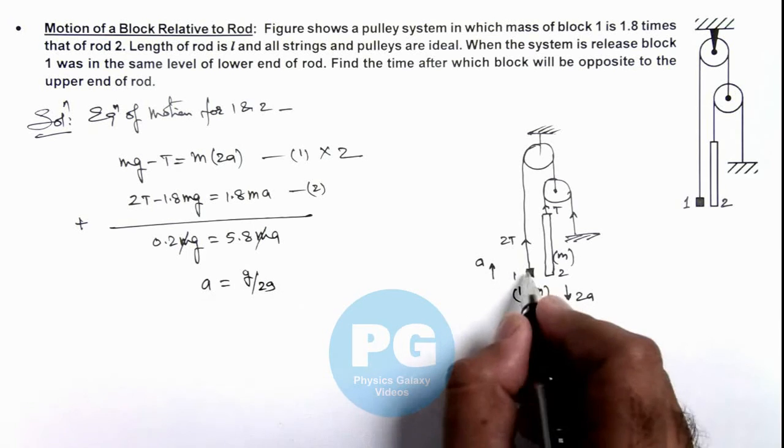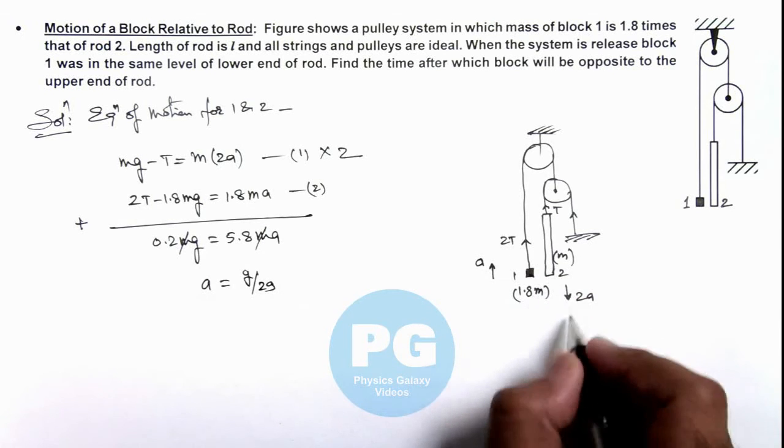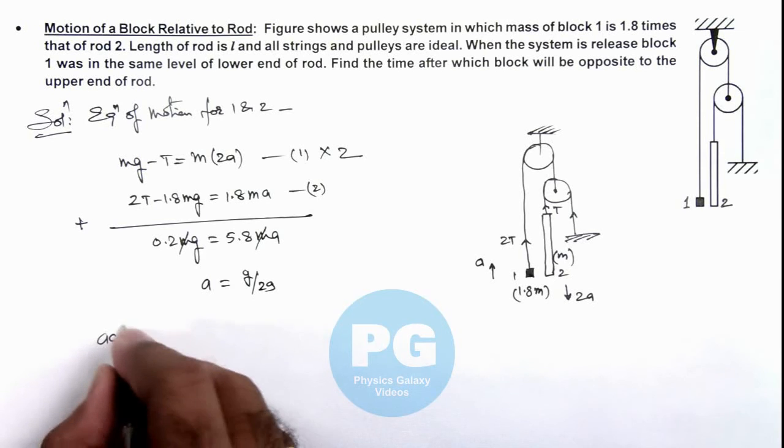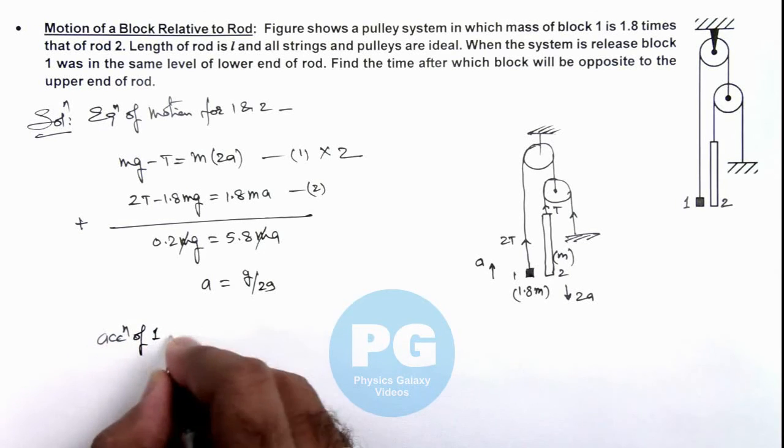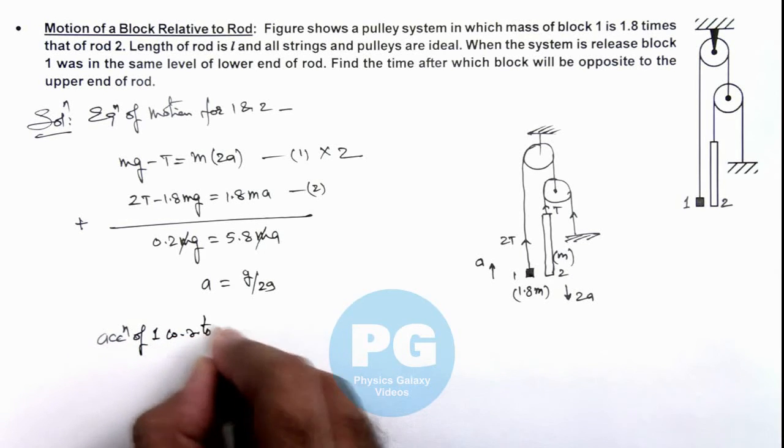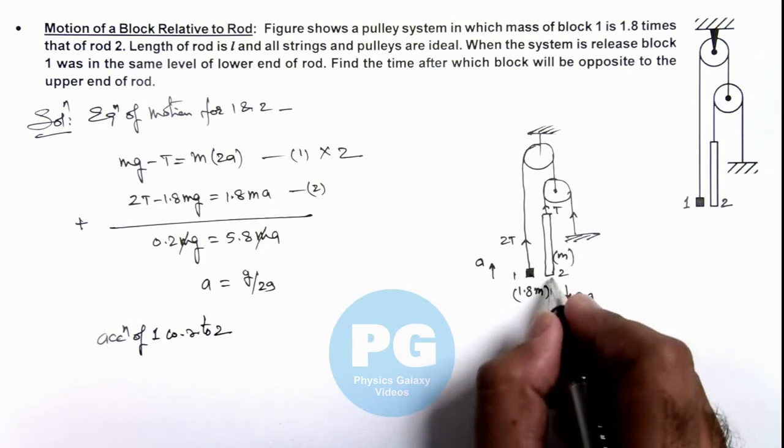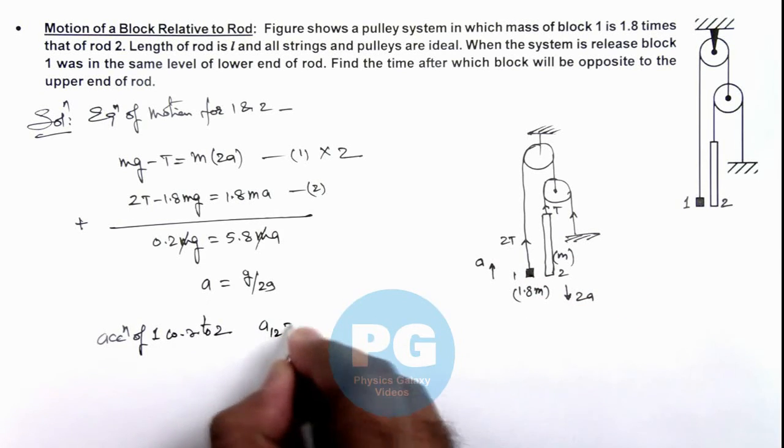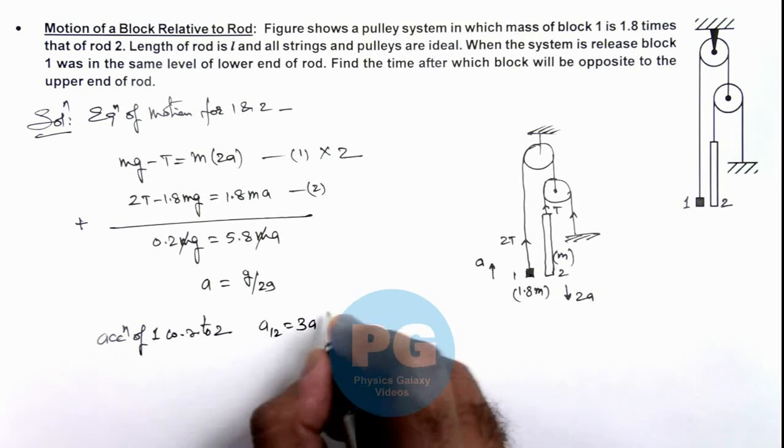So this is going up with acceleration a, and 2 is coming down with acceleration 2a. So if we calculate acceleration of 1 with respect to 2, if we consider this rod to be at rest and this going up, then acceleration of 1 with respect to 2 we can write as 3a, that will be 3g/29.